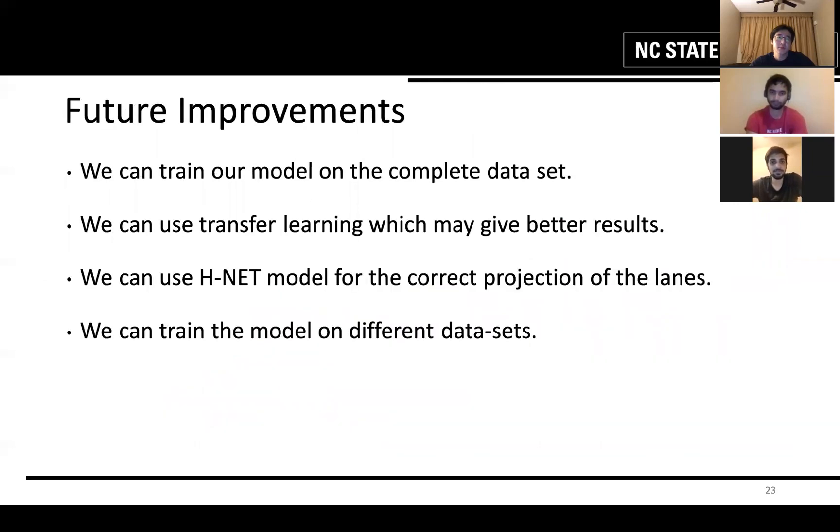Here are some of the future improvements that we can do to our model. We can train our model on the complete dataset. We can use transfer learning which should give better results. We can use H-NET model for the correct projection of the lanes for the bird's eye model. We can train the model on different datasets as well which will also increase our accuracy.